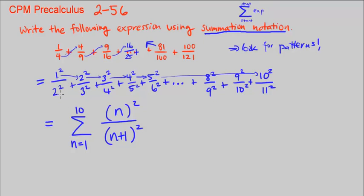So when n is 1, it's going to be 2 squared. When n is 2, 2 plus 1 is 3 squared. When n is 3, 3 plus 1 is 4 squared. So this is it. This is the expression using summation notation.